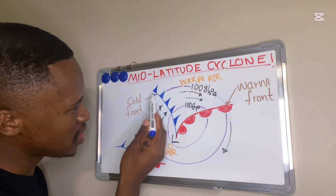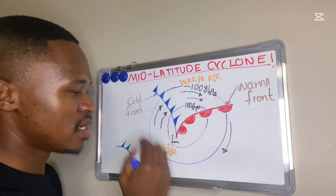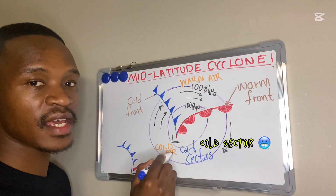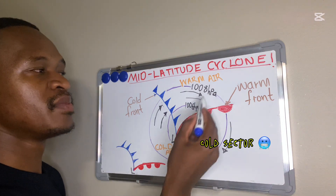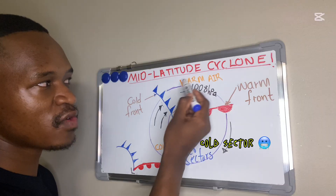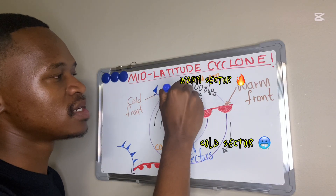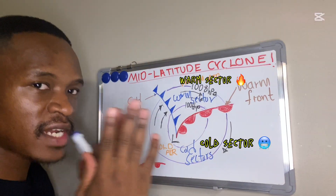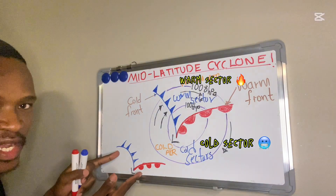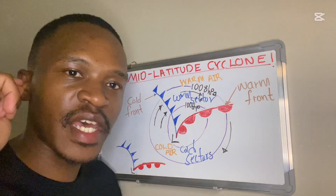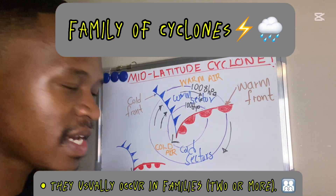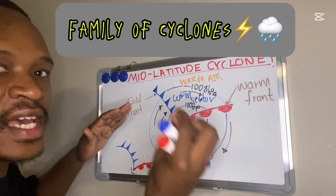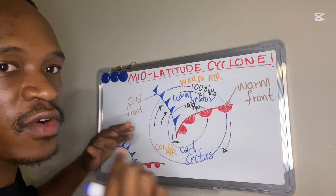The area behind the cold front, where it is cold air, is known as the cold sector. The area behind the warm front, where we have warm air, is our warm sector. Mid-latitude cyclones do not occur in isolation — they occur as a family. You find two or more cyclones moving along the same path, and we call this a cyclone family.